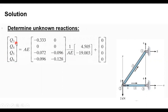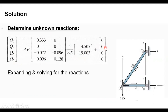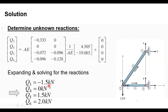The second step is to find the unknown external reactions using Q3, Q4, Q5, Q6 equals K21 times the unknown displacements, with the second term being zero. For Q3, multiplying: minus 0.333 times 4.505 gives minus 1.5. For Q4, the coefficients are zero, so Q4 equals zero. We repeat the same process for Q5 and Q6.